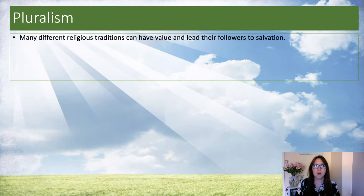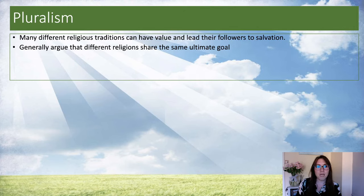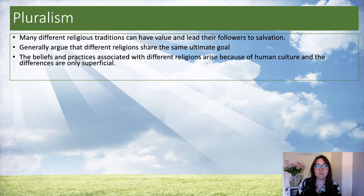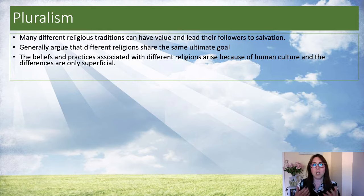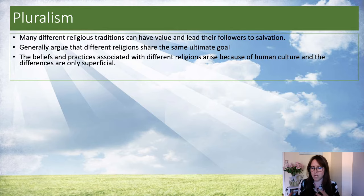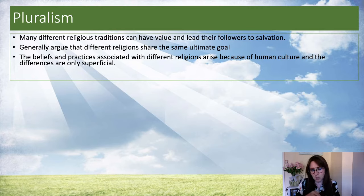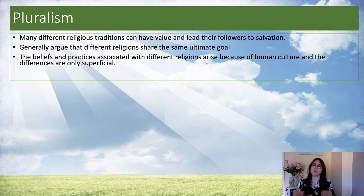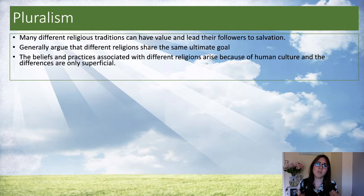Finally, pluralism. This is the view that there are many different religious traditions that can all have value and lead followers to salvation. Generally it's argued that different religions share the same ultimate goal. The beliefs and practices associated with different religions arise because of human culture, and the differences are only superficial. Our culture is different from the culture in India, Pakistan, or Jerusalem — but these differences arising through religion are just superficial. The core values in all religions can be seen as very similar, like the golden rule: treat others as you want to be treated. That's a common theme in many world religions.